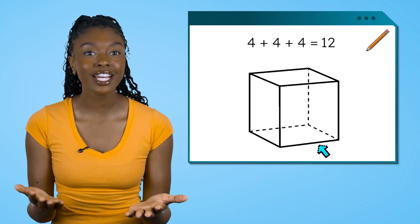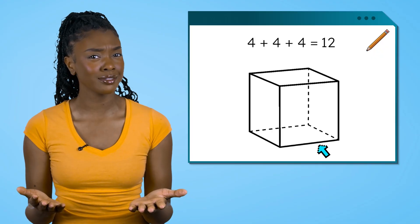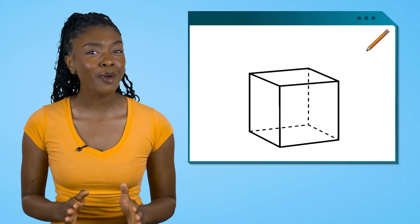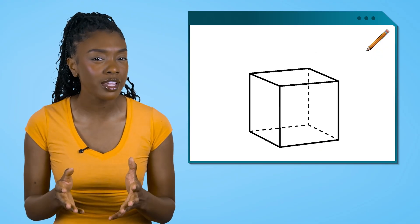making a total of 12 edges. Okay. We've looked at the faces and edges, but what about these vertices? Which part of the cube do you think could be the vertices?